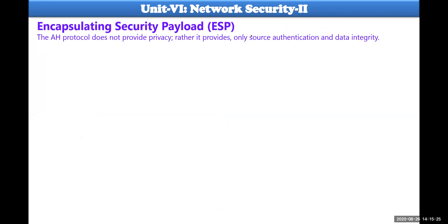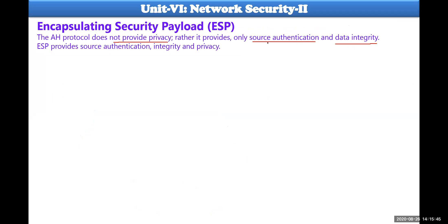AH protocol cannot provide any privacy to the data. Privacy cannot be provided. Rather, it provides source authentication and data integrity. Source authentication means verifying whether the person sending the data is authenticated to that function or IP address. Data integrity is also provided by AH. Whereas ESP provides source authentication plus integrity and privacy. Both data and source integrity will be provided by ESP.